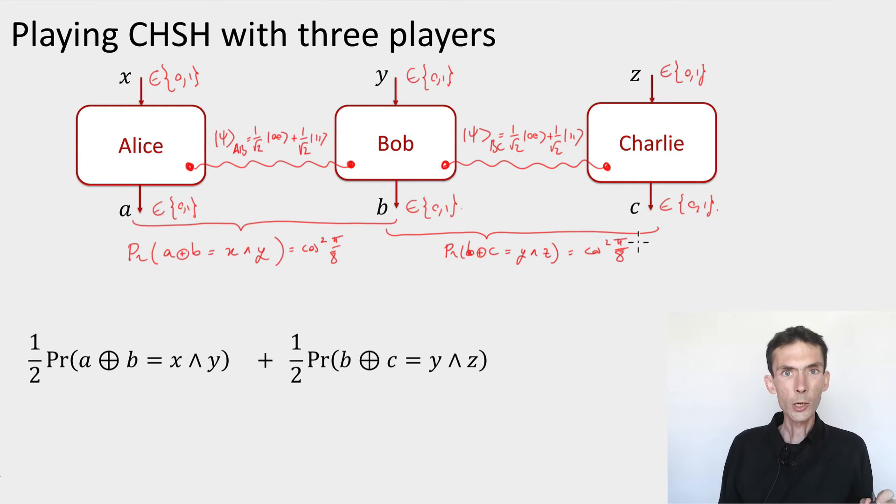pi over 8. Nothing special here. But the question that I want to ask is, is it possible to get the best of both worlds simultaneously?